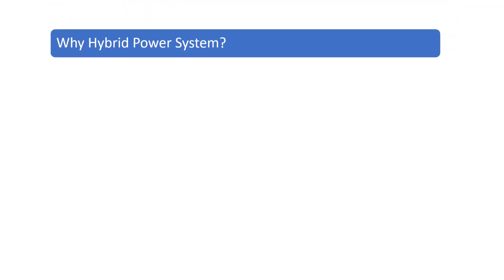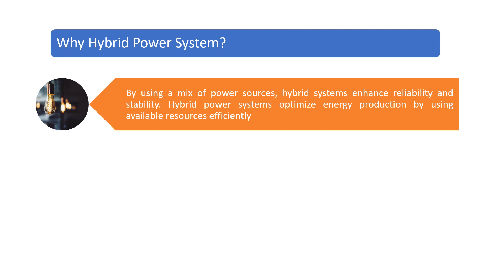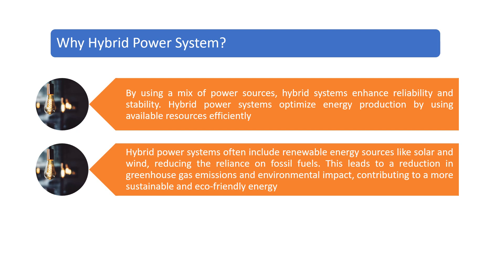By using a mix of power sources, hybrid systems enhance reliability and stability, and optimize energy production by using available resources efficiently. Hybrid power systems often include renewable energy sources like solar and wind, reducing the reliance on fossil fuels. This leads to a reduction in greenhouse gas emissions and environmental impact, contributing to a more sustainable and eco-friendly energy solution.